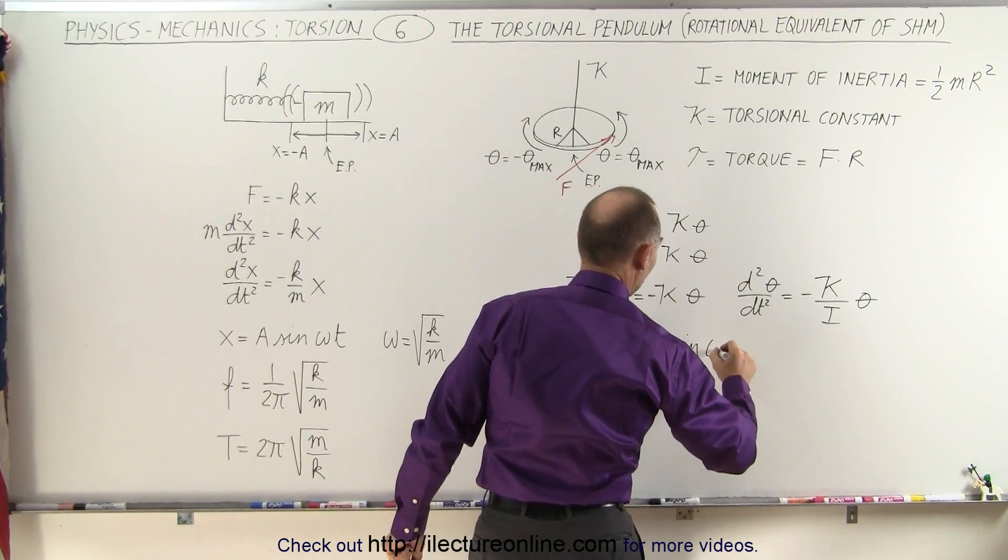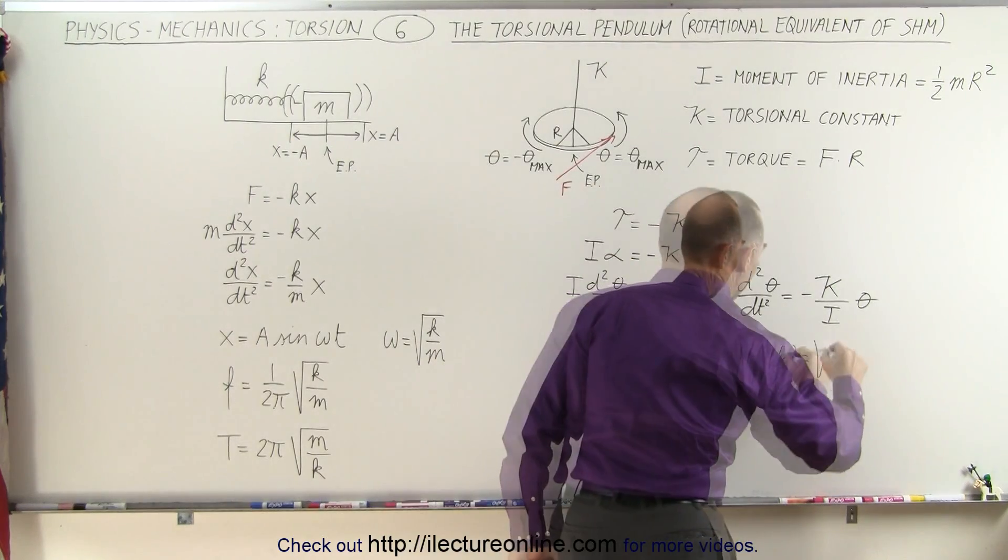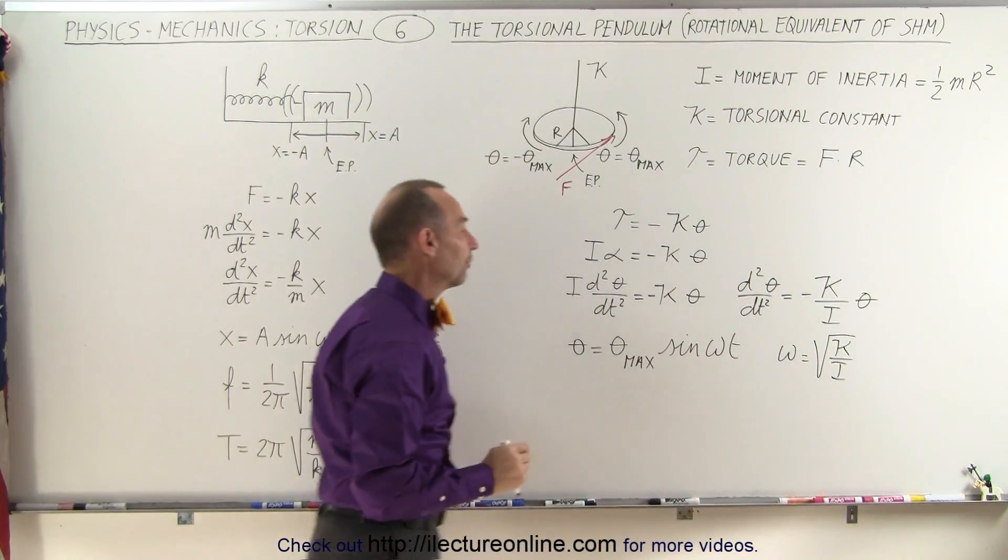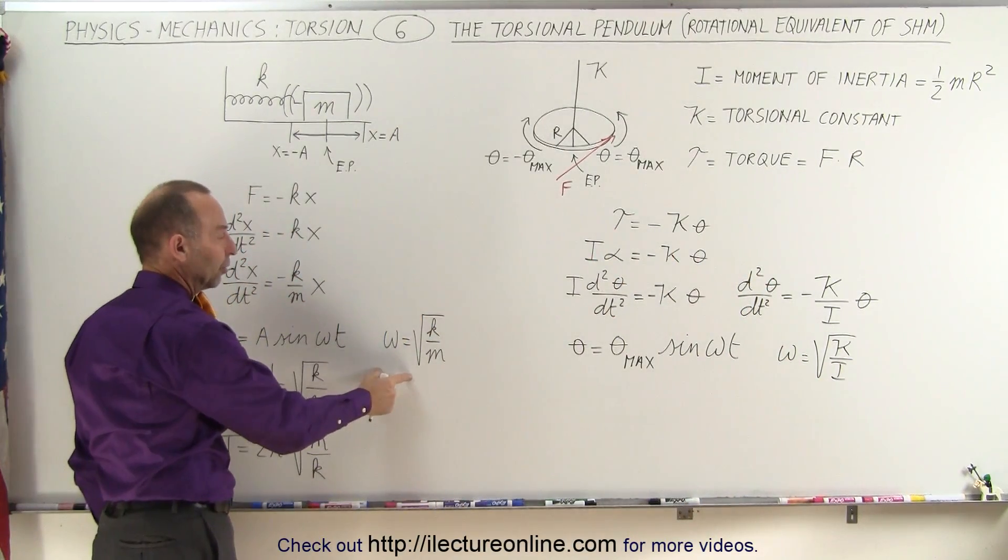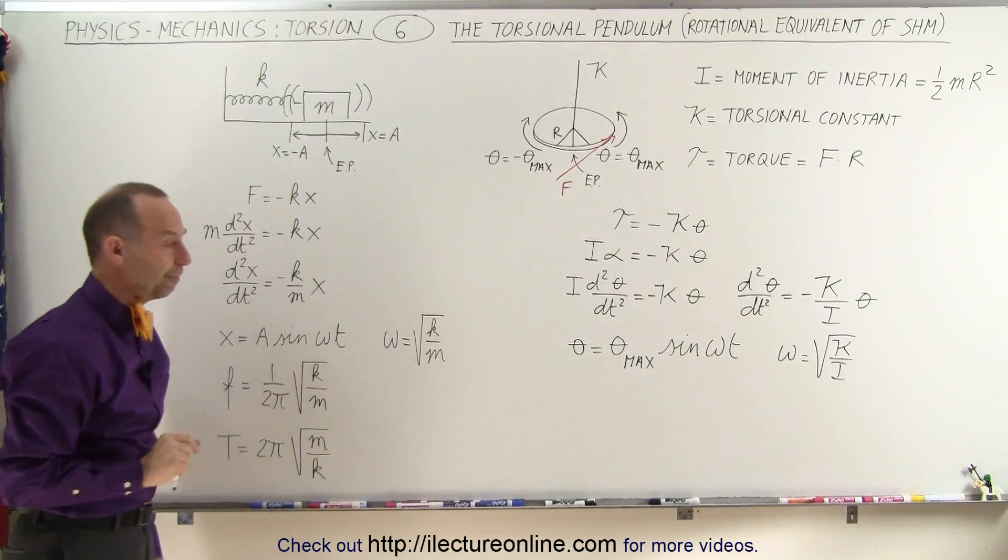Now in this case, omega is going to be equal to the square root of kappa, which is the torsional constant divided by the moment of inertia, which is equivalent to the spring constant divided by the mass in this type of system.